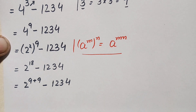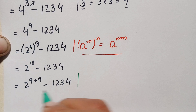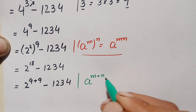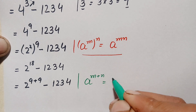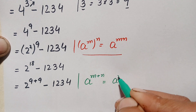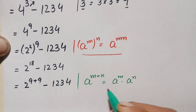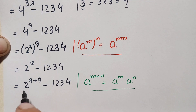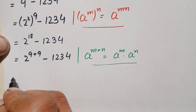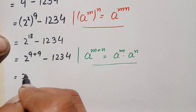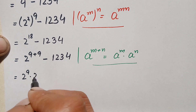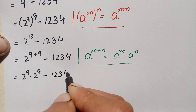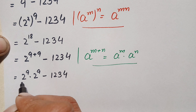Here we will use another exponential identity: a raised to power m plus n, which can also be written as a raised to power m, times a raised to power n. Using this identity, we can write this number as 2 raised to power 9, times 2 raised to power 9, minus 1234.